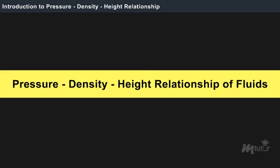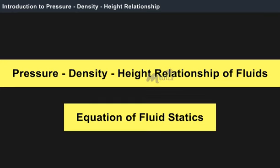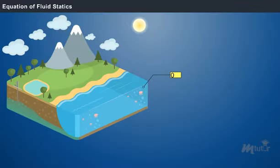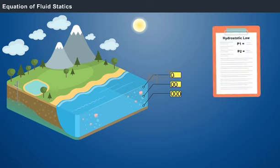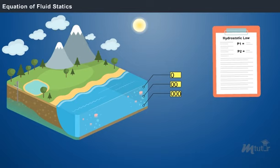In this topic, you are going to learn about the pressure-density-height relationship of fluids at rest. This phenomenon is called the equation of fluid statics. The basic equation of fluid statics, i.e. a fluid at rest, is governed by the variation of pressure at different points of the fluid. Thus, the pressure at any point in the fluid is calculated based on the hydrostatic law.